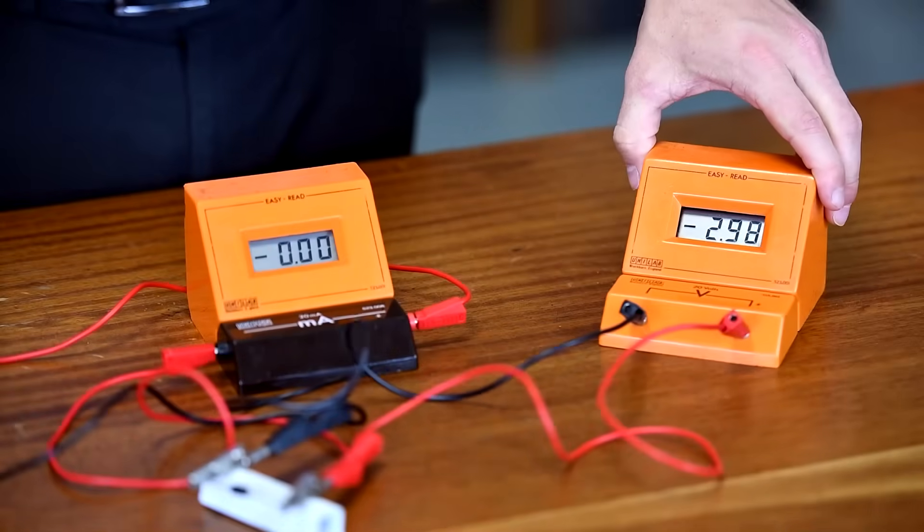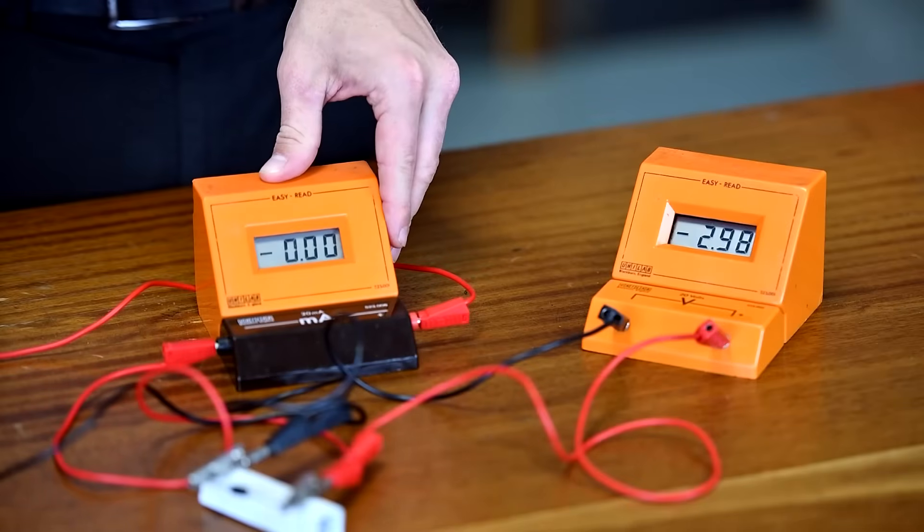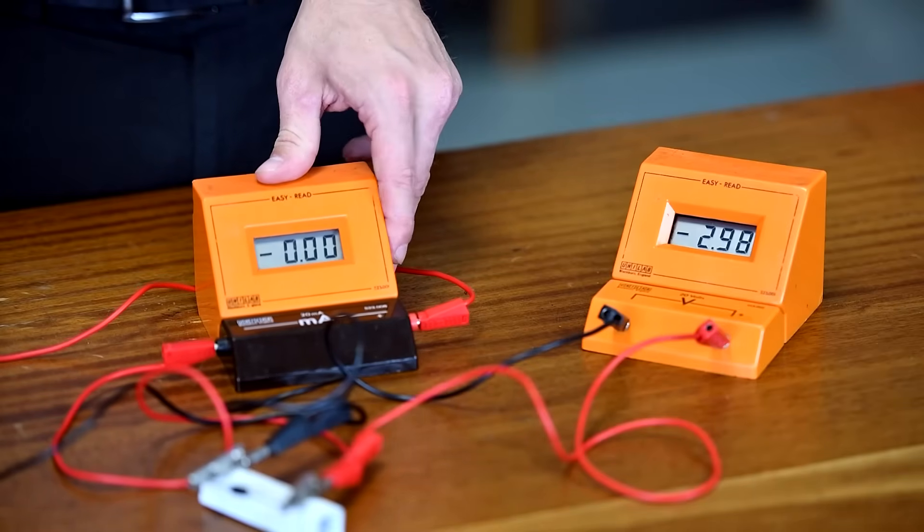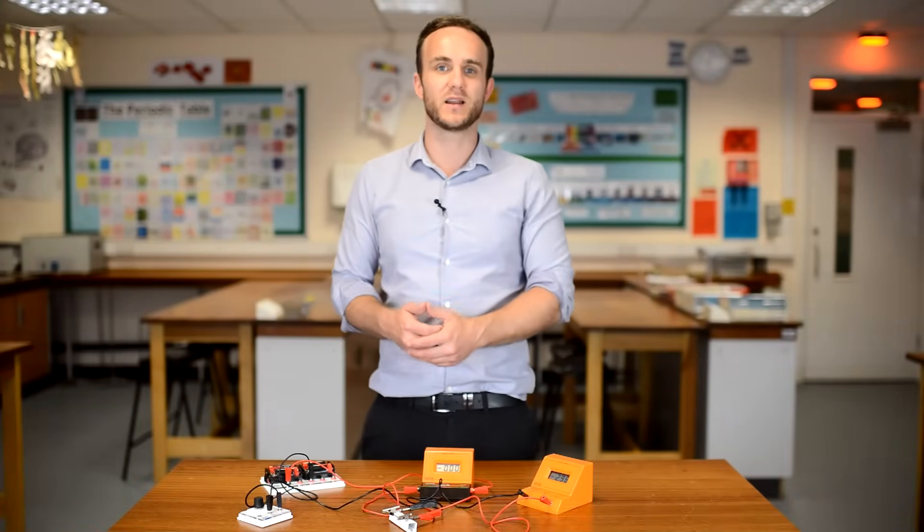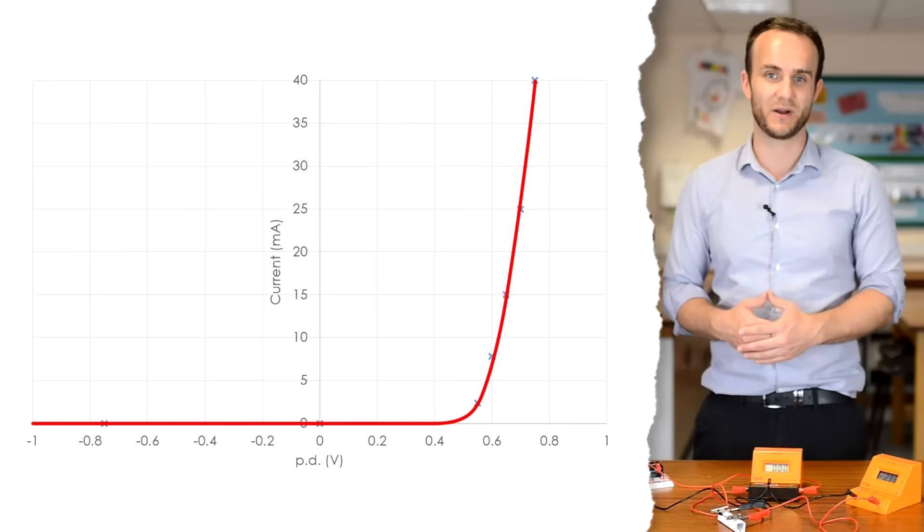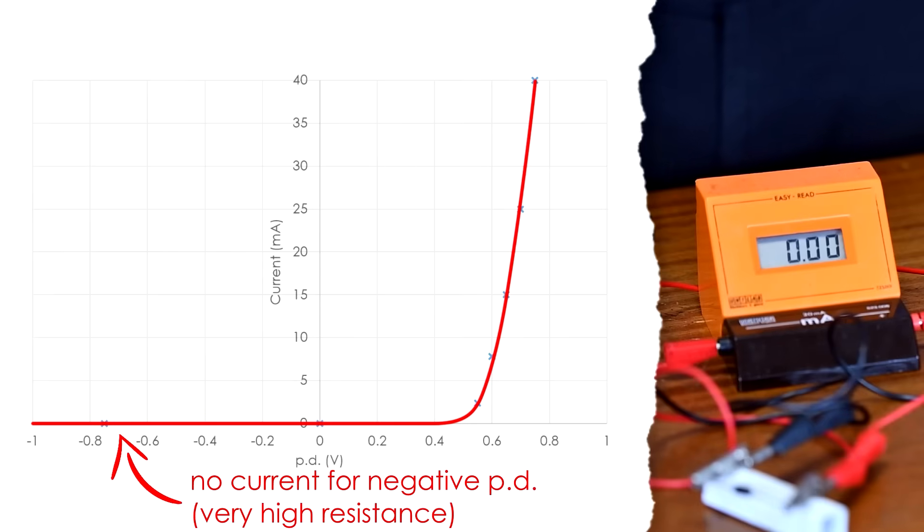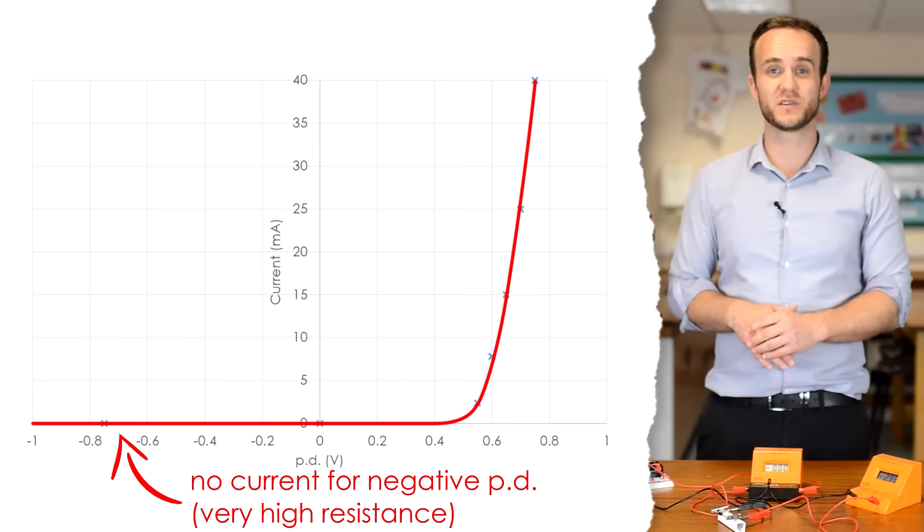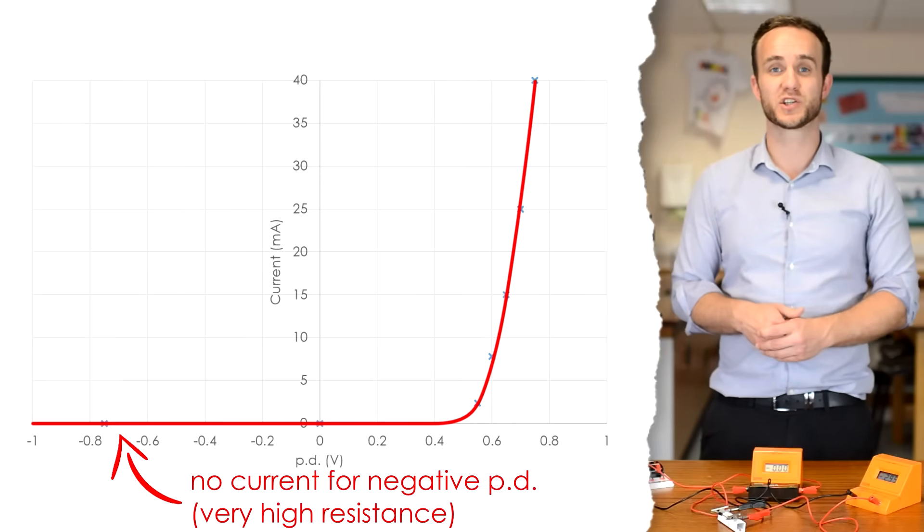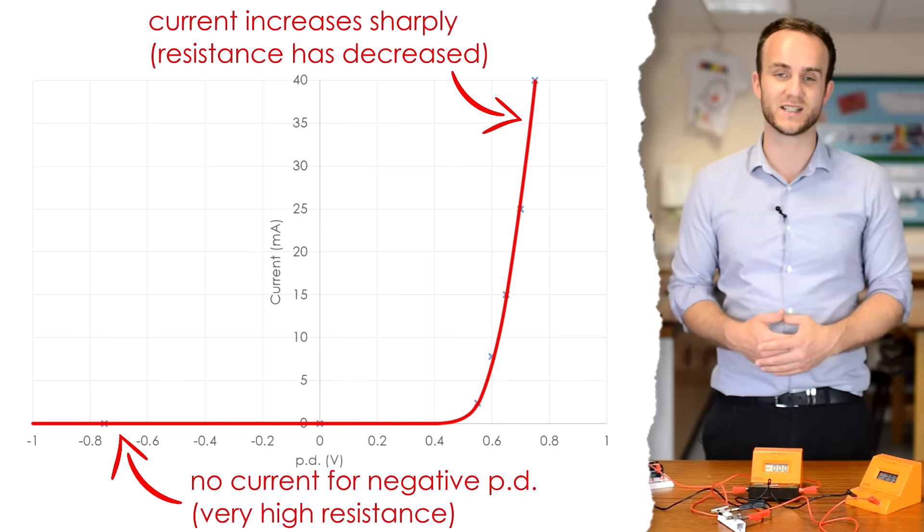You can see that I've got a PD of minus, basically, 3 volts across the diode. But the current is 0. There's no problem with the ammeter or the equipment. It's just because we're using a diode. Diodes are special because they act like one-way streets for current. So our graph should look something like this. We don't actually have a negative current on this graph. That's because diodes don't allow it. So for a negative voltage or a negative potential difference, current is going to be 0. In other words, the diode has a very high resistance in that direction. It's only when we get to a certain voltage that we get current increasing. And you can see that with our sharp increase in gradient on the graph. And that sharp increase in gradient shows that the resistance has decreased to basically 0.